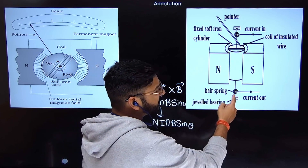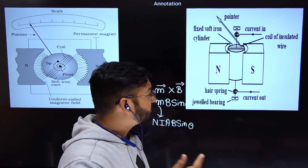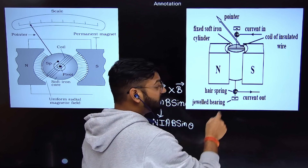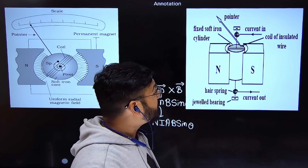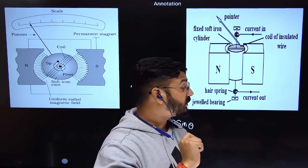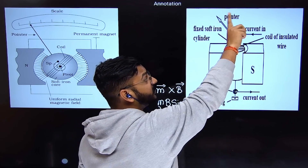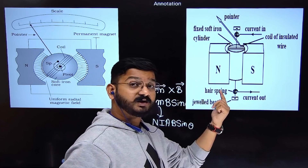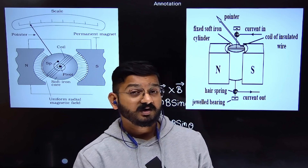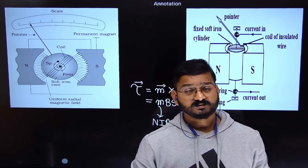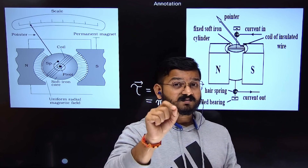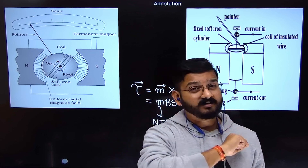The soft iron core is connected to a hairspring — a very thin spring. When the pointer rotates according to the amount of current passing through the galvanometer, the hairspring develops a restoring torque, which tends to bring the pointer back to its original position. There are two torques: the deflecting torque in the current-carrying coil, and the restoring torque in the spring. In equilibrium, both torques are equal.